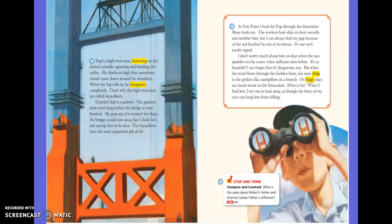Pop's a high iron man, balancing on slatted catwalks, spinning and bending the cables. He climbs so high that sometimes clouds come down around his shoulders. When the fog rolls in he disappears completely — that's why the high iron men are called skywalkers. Charlie's dad is a painter. The painters start work long before the bridge is even finished. My pop says if it weren't for them the bridge would rust away. But I think he's just saying that to be nice. The skywalkers have the most important job of all.